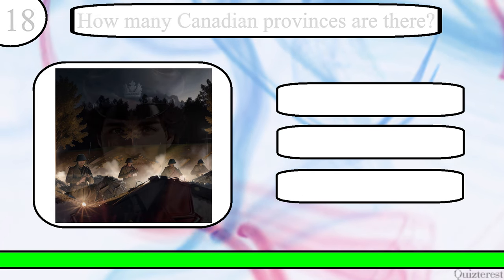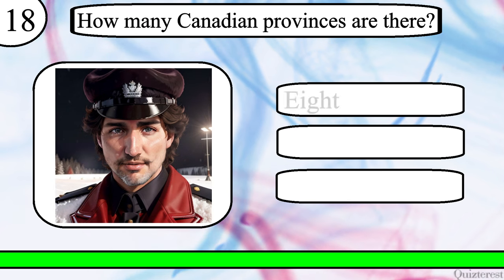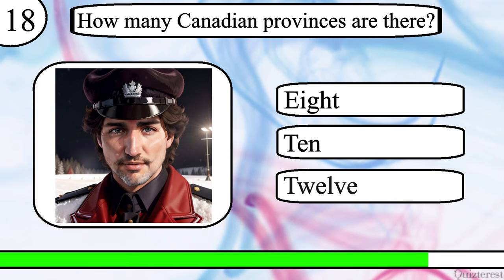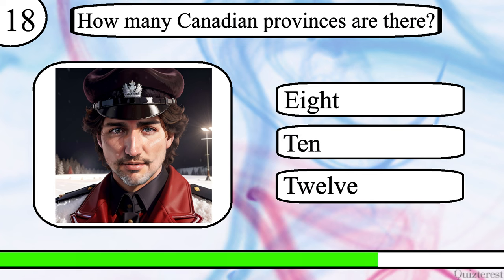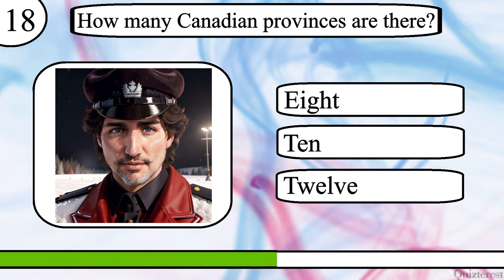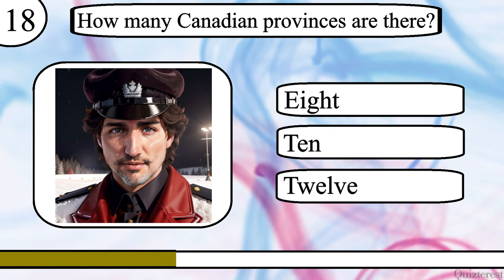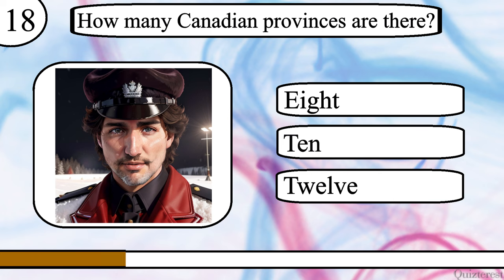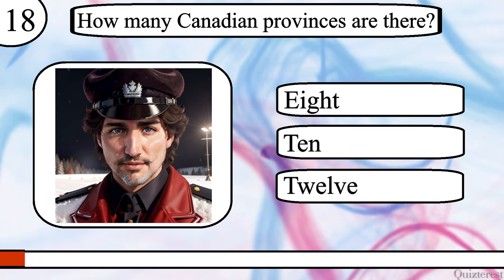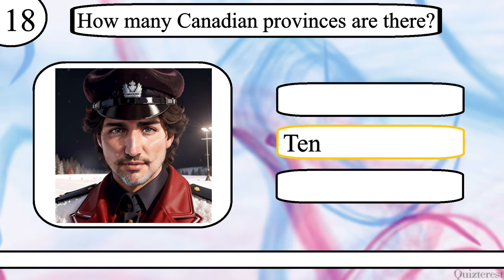Question 18. How many Canadian provinces are there? 8, 10 or 12? The correct answer is 10.